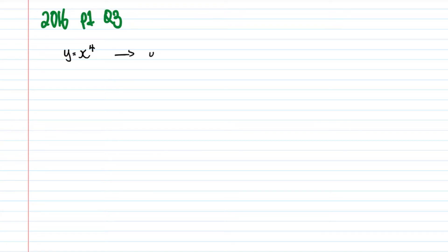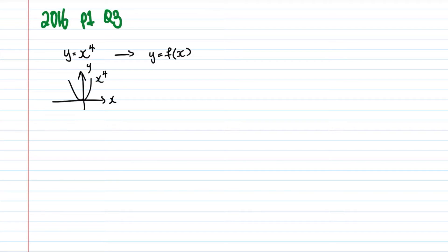The first part of the question asks: the curve y = x⁴ is transformed onto the curve with equation y = f(x). If you key this into your graphics calculator, you'll know the shape of an x⁴ graph looks very similar to a quadratic curve. The turning point on y = x⁴ corresponds to the coordinates (a, b), and it passes through (0, c). They've given that f(x) has the form k(x - l)⁴ + m, where a, b, and c are positive constants with c > b.